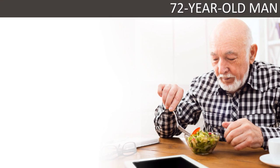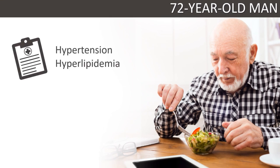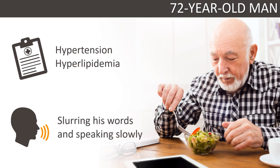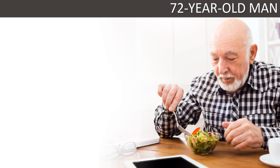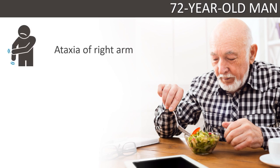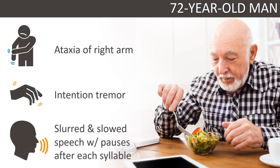A 72-year-old man with a history of hypertension and hyperlipidemia was chatting at the dinner table with his family when he suddenly missed his mouth with his fork and began slurring his words and speaking slowly. He is brought to an emergency department where pertinent neurological exam findings include ataxia of his right arm, intention tremor, and speech that is slurred and slow with pauses after each syllable. The neurology team is consulted to evaluate his dysarthria.